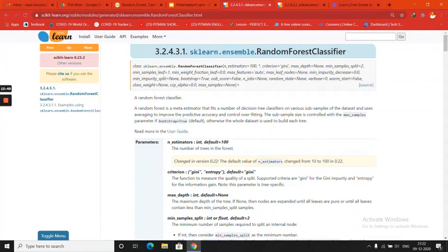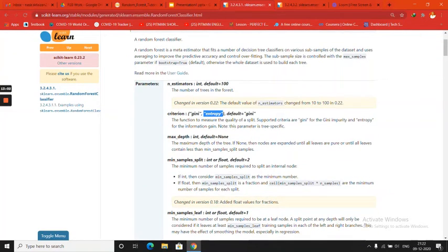So n_estimators is again the same thing. Now criterion equals to Gini or entropy. You will find this similarly in the decision tree. Entropy is basically a calculation method by which you will get information gain. Try to study about it. And max_depth is the depth of the tree that you want. Initially it is set to none, so it will just grow and grow. I suggest that you basically choose it, otherwise you will again overfit the model.